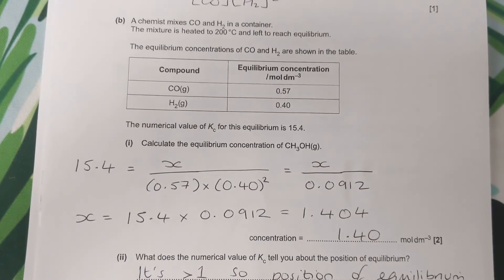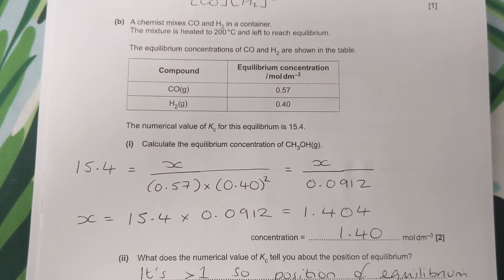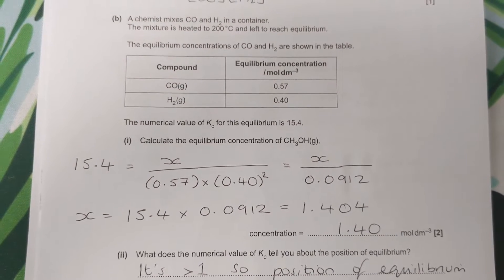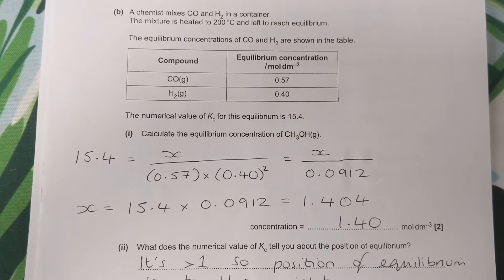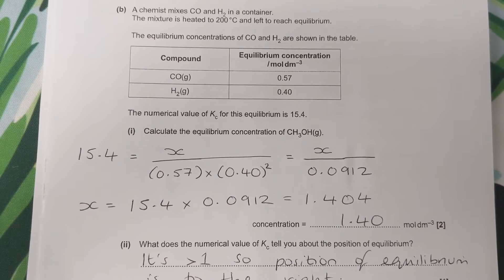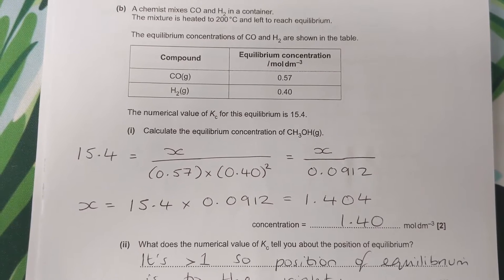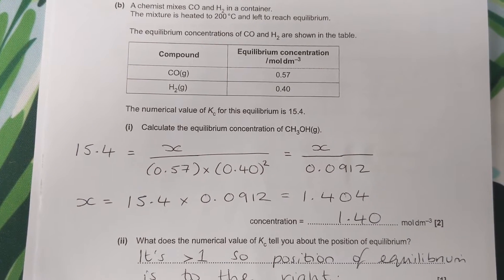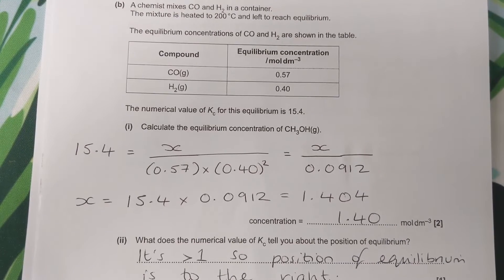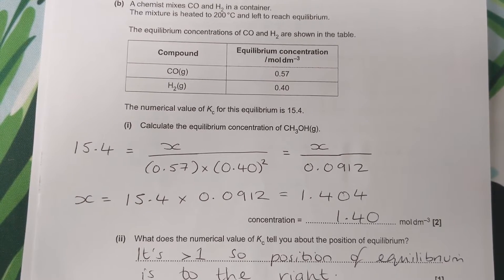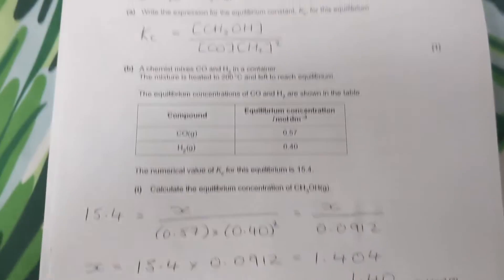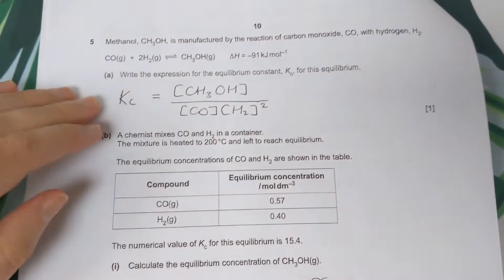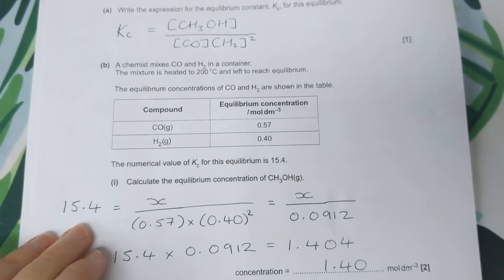Next question says the chemist mixes carbon monoxide and hydrogen in a container. The mixture is heated and left to reach equilibrium. We have equilibrium concentrations of carbon monoxide and hydrogen. It gives us the value for KC, and we have to find the equilibrium concentration of methanol. So we do this by rearrangement using our KC expression above.